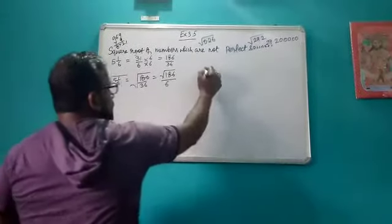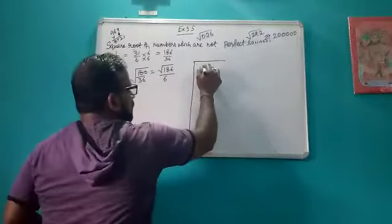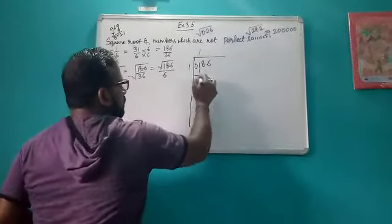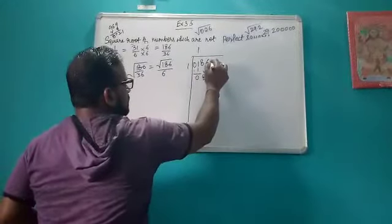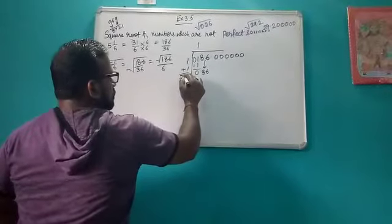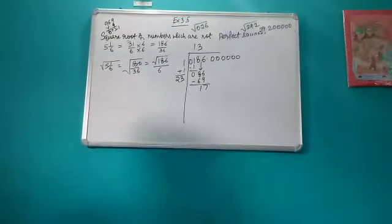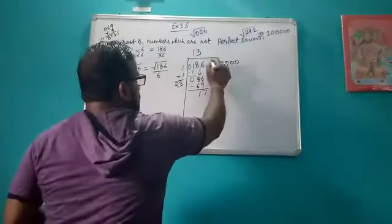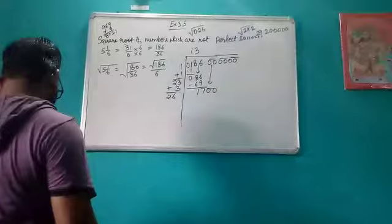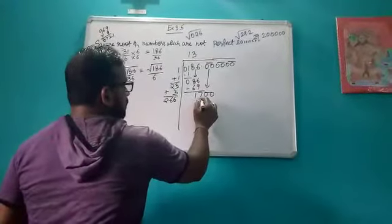We will find the square root of 186 using the same long division method. Starting with 186, 1 into 1 is 1, remainder 0. We bring down 86, and after the decimal we put six zeros. Then 1 plus 1 is 2. We bring one of the zeros and the next pair. It becomes 23 plus 3, which is 26. Putting 6 here gives 1596. We place the decimal and 6 comes here, giving 4, 4, 4, 0, 1.